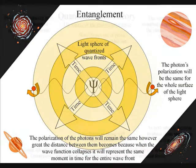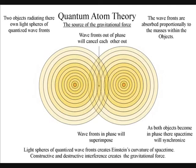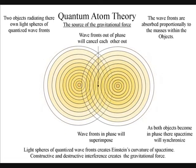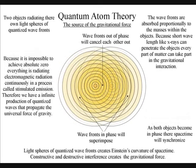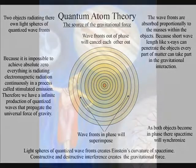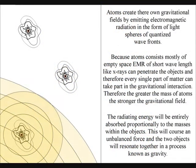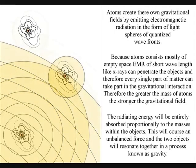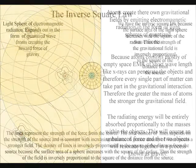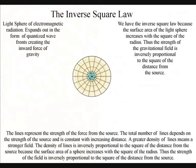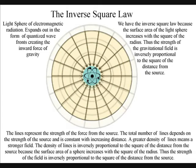When the wave fronts of two spheres come in contact, the wave fronts out of phase will cancel each other out, and the waves in phase will superimpose. The radiating energy will be entirely absorbed proportionally to the masses within the objects. This will cause an unbalanced force, and the two objects will resonate together in a process known as gravity. Because atoms consist mostly of empty space, electromagnetic radiation of short wavelengths, like x-rays, can penetrate the objects, and therefore every single part of matter can take part in the gravitational interaction. We have the inverse square law because the surface area of the light sphere increases with the square of the radius, thus the strength of the gravitational field is inversely proportional to the square of the distance from the source.